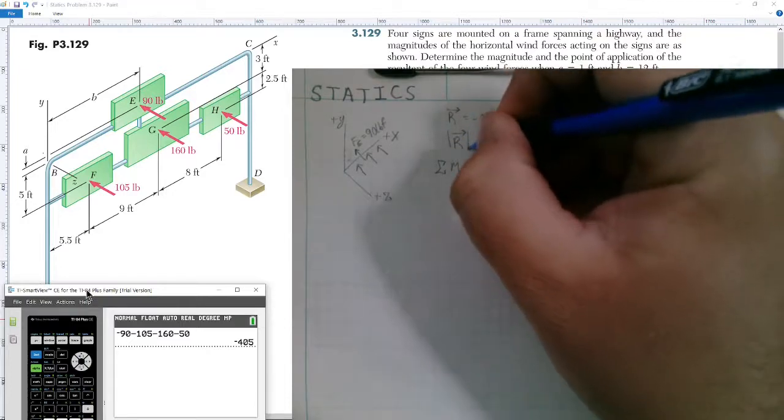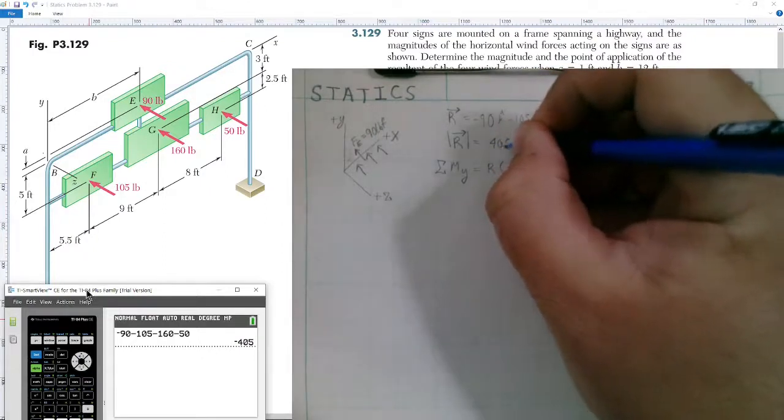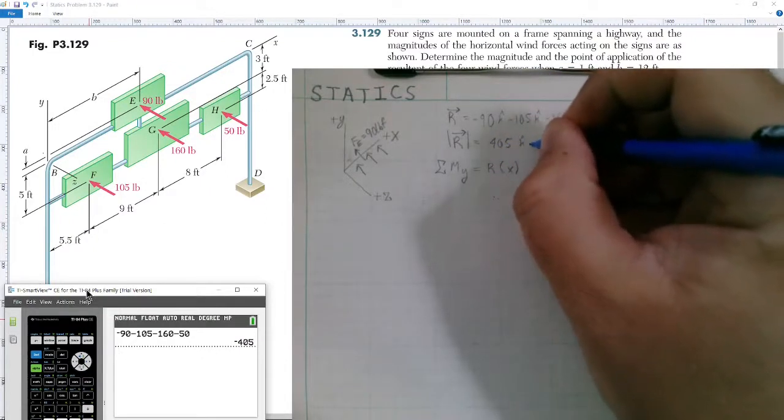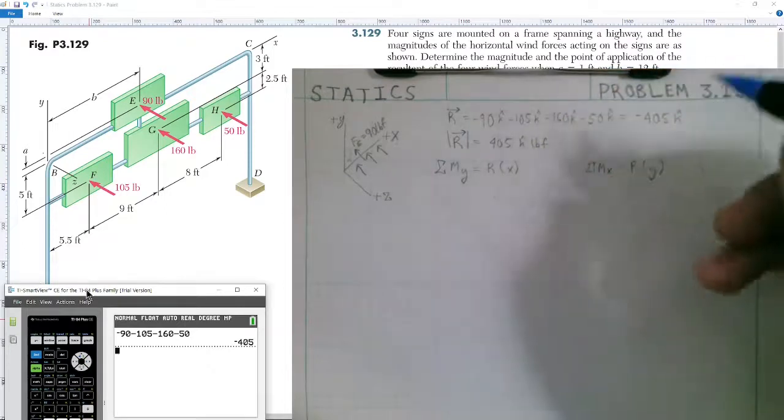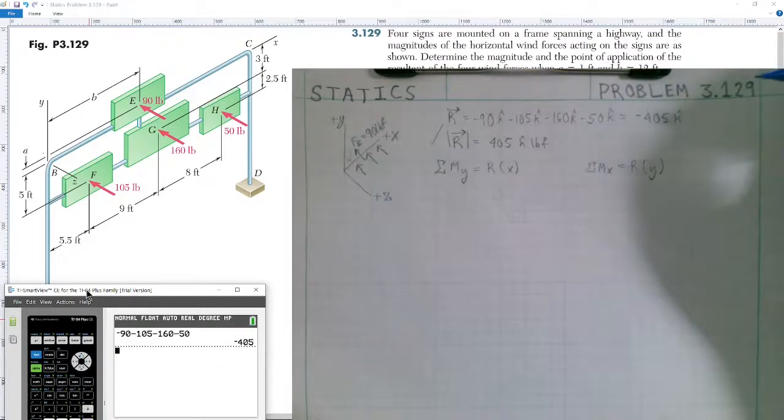That gives the resultant equal to negative 405 in the K-hat direction. If we were to define the magnitude of this vector, it would simply be the positive value of 405 pounds of force. So we have our magnitude of the resultant already determined.